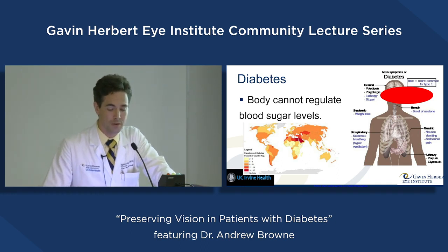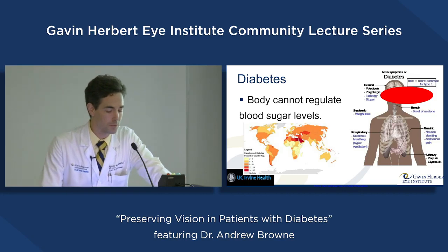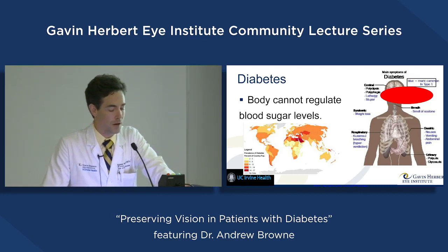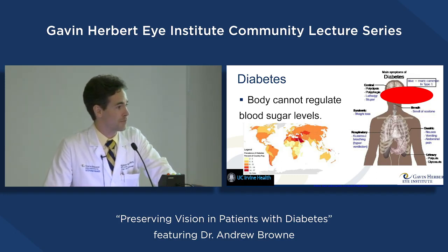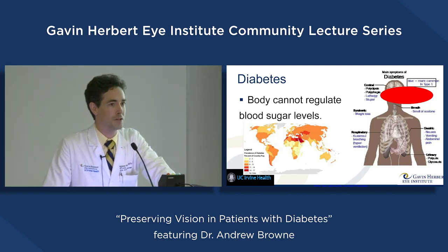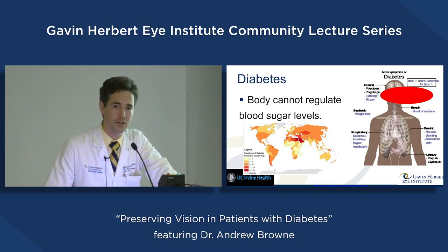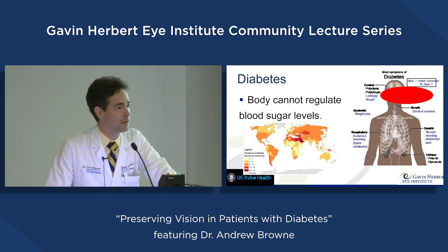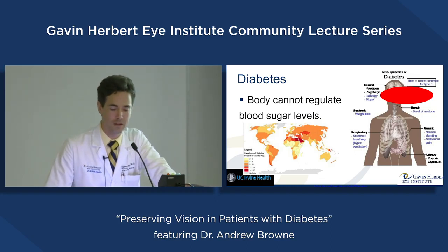We see a diagram showing multiple systems in the body affected by uncontrolled high blood sugar. Diabetes is very common in developed countries — our government subsidizes sugar, and sugar is not hard to find. In developing civilizations, sugar was a rare commodity, like gold. Nowadays we're all eating gold on a daily basis.